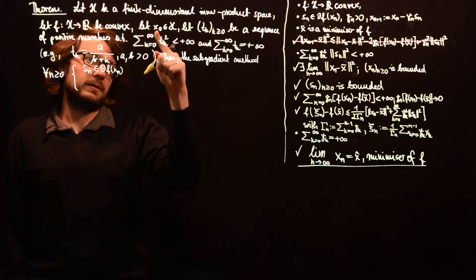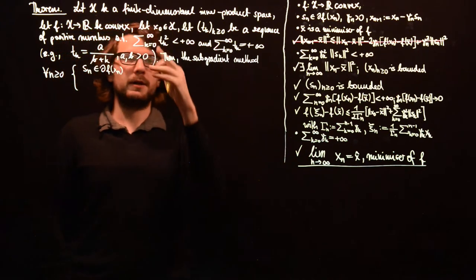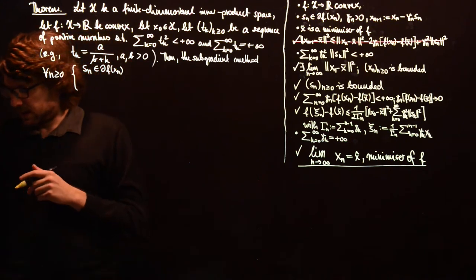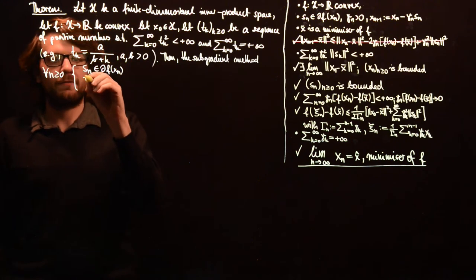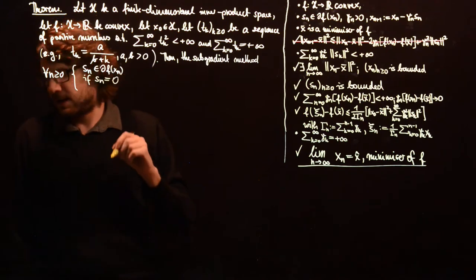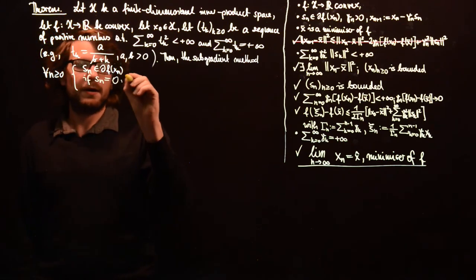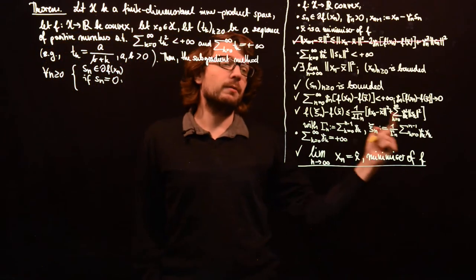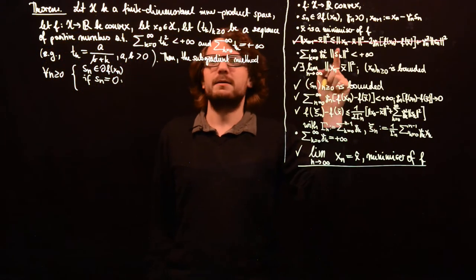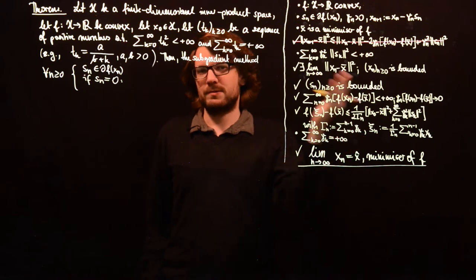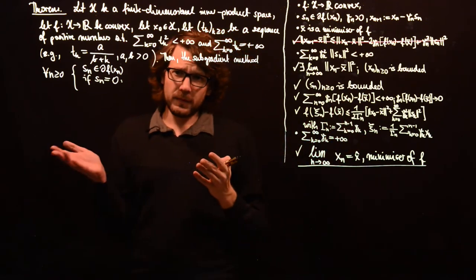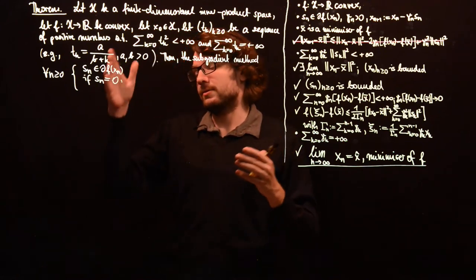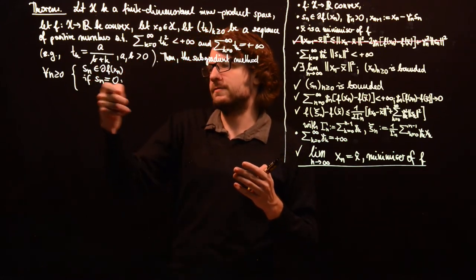We are already given a point x_0 in H, so we can start this process. And if s_n happens to be 0, we might have problems determining gamma_k because gamma_n is t_n over norm of s_n.